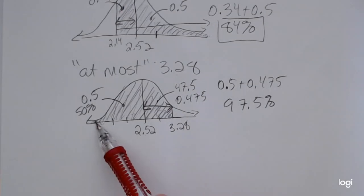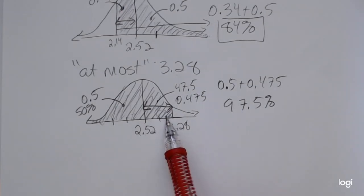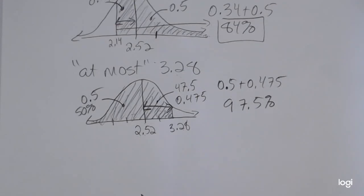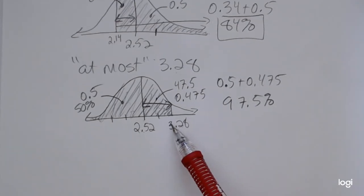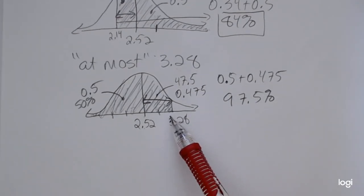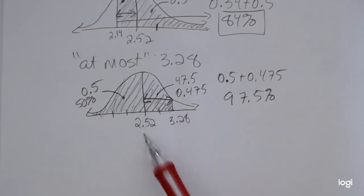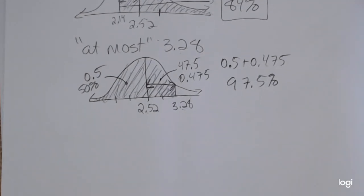You can also think of this as a percentile — a value of 3.28 is the 97.5th percentile, meaning that 97.5% of the population of grade point averages fall below 3.28, given this mean and standard deviation.